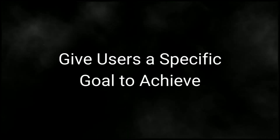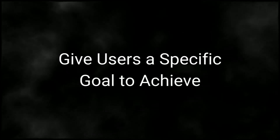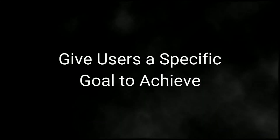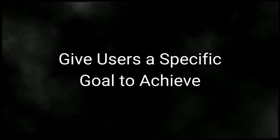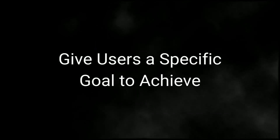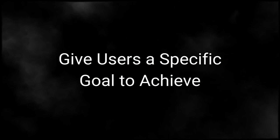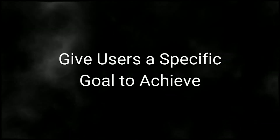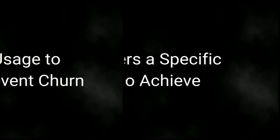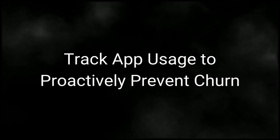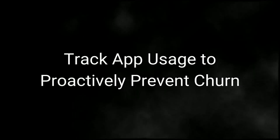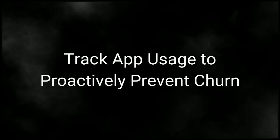Number three, give your users a goal to achieve that's actually going to benefit them in real life applications — not just get them clicking here and then clicking there, but have them actually complete a task that will result in some sort of outcome that they find value in. And number four, track your users' usage of the app so that you can reach out to them and catch them before they actually do churn for good.